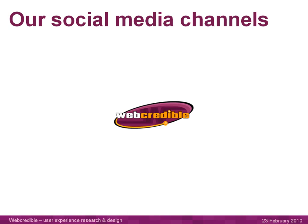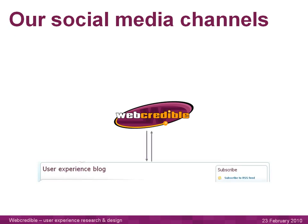Next, we're going to talk about the social media channels we use at Webcredible. First of all, we've got our website, which is the hub of all our information and content. Then we have the user experience blog, which is an extension of our website. The arrows here represent the flow and direction of information and content.